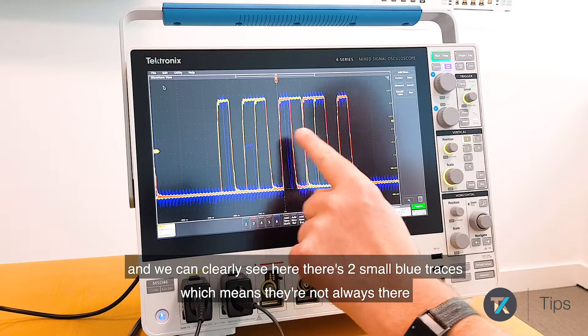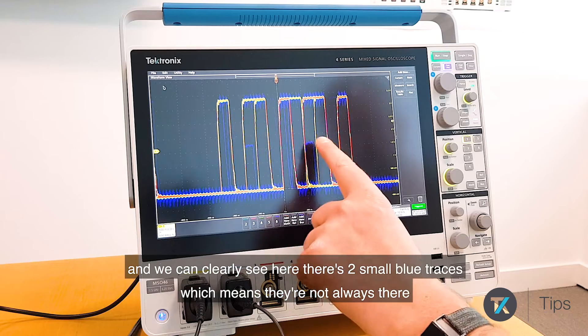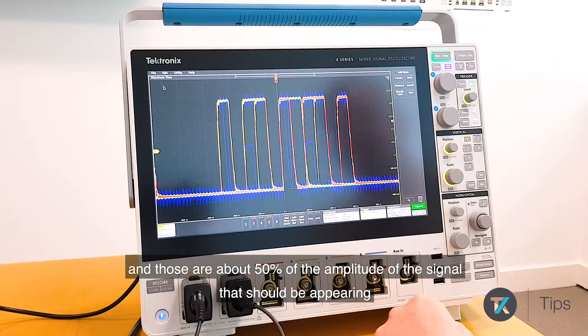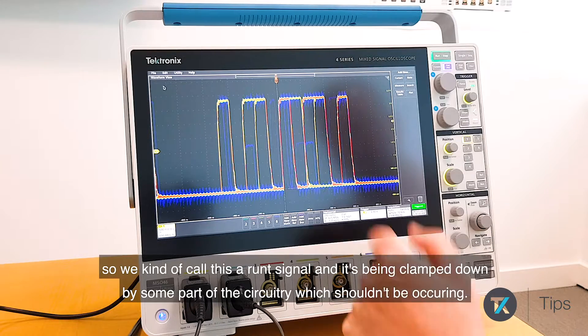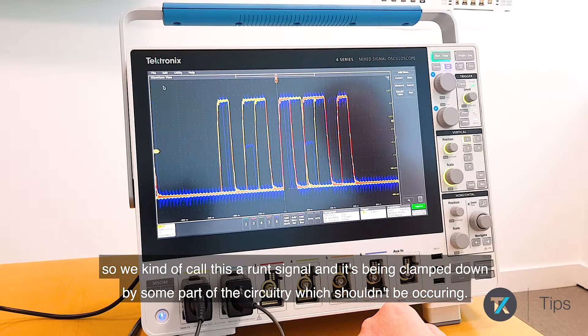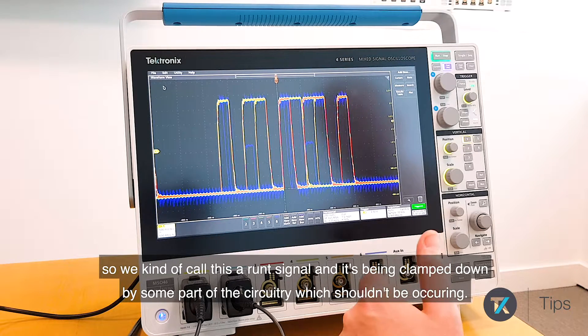there's two small blue traces, which means they're not always there. And those are about 50% of the amplitude of the signal that should be appearing. So we kind of call this a runt signal. And it's been clamped down by some parts of the circuitry, which shouldn't be occurring.